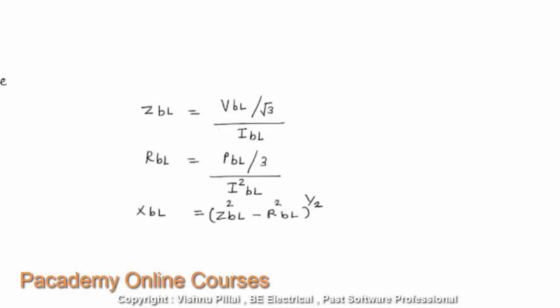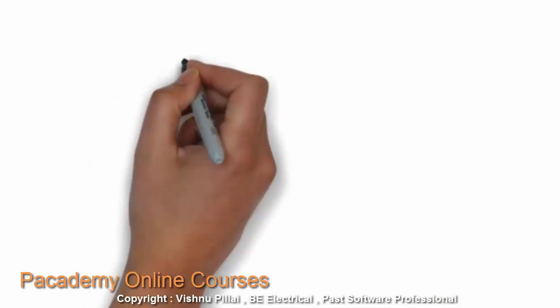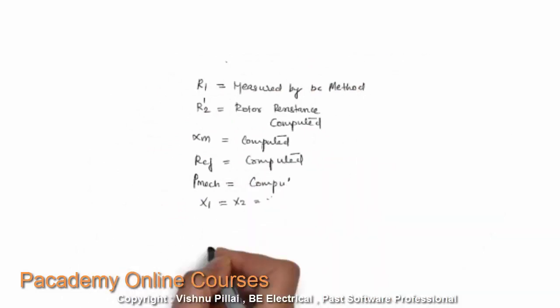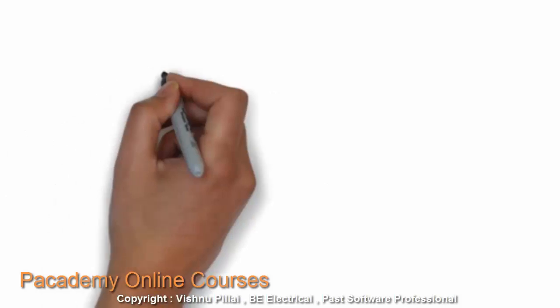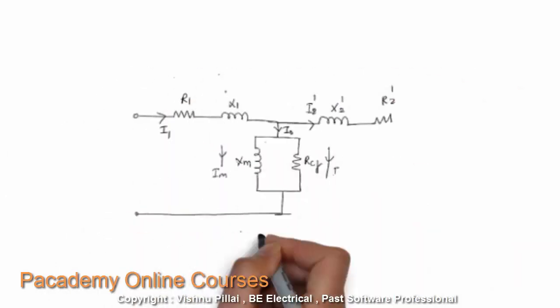The resistance is found using the I²R power loss equation. The reactance XBL is found from √(ZBL² − RBL²), since impedance equals the square root of resistance squared plus reactance squared. In summary: R1 is measured by the DC method; R2 (rotor resistance) is computed; XM (magnetizing reactance) is computed; RCF (core loss component) is computed; X1 = X2 is also computed; and the mechanical power output can be determined using the appropriate equation.